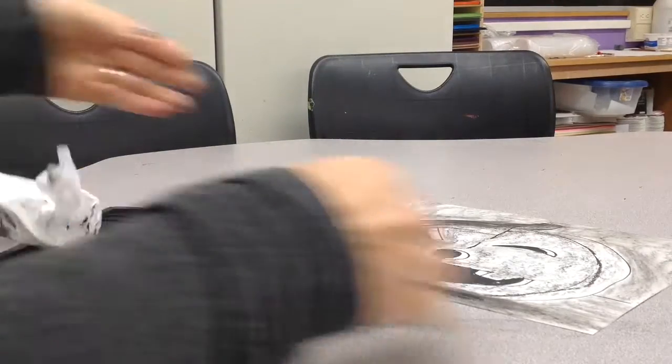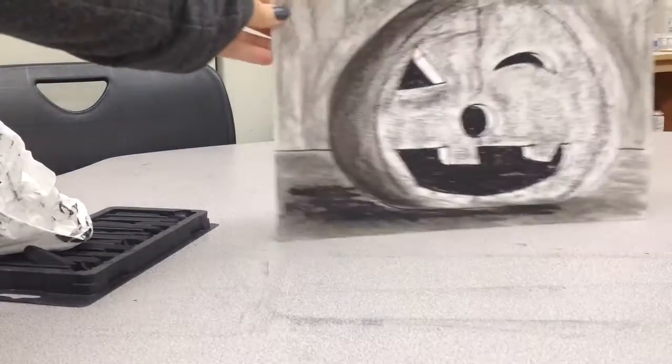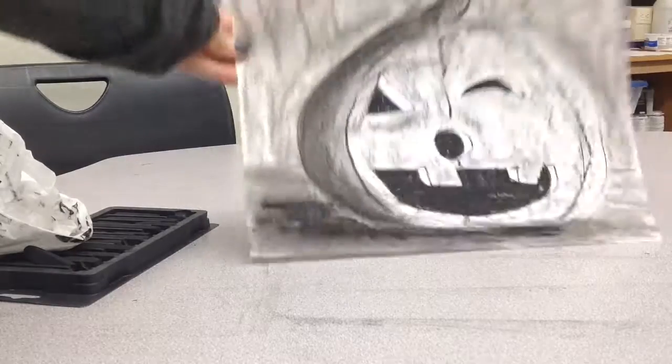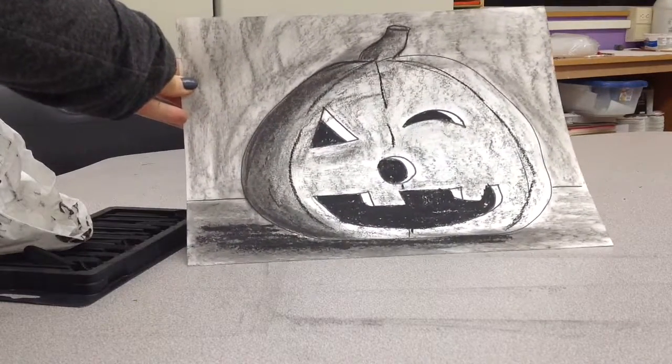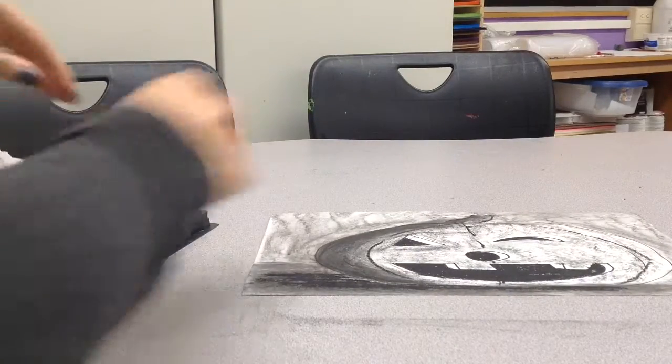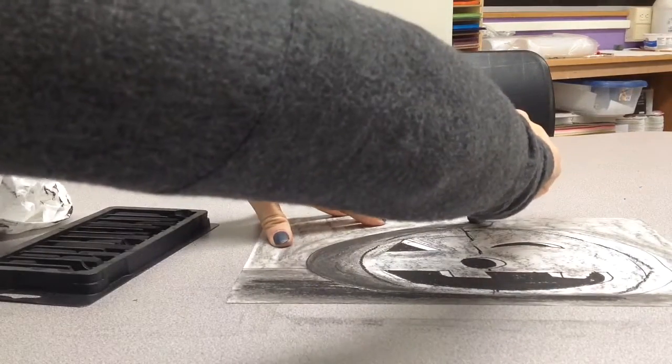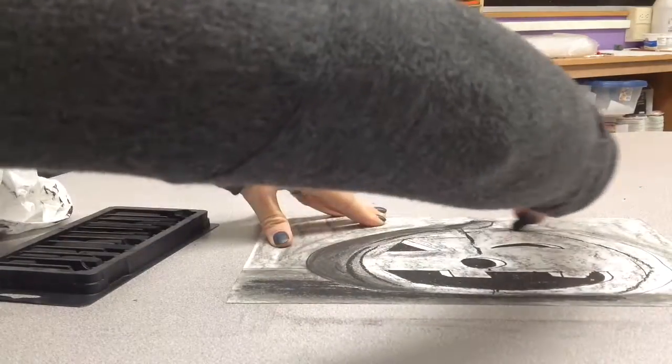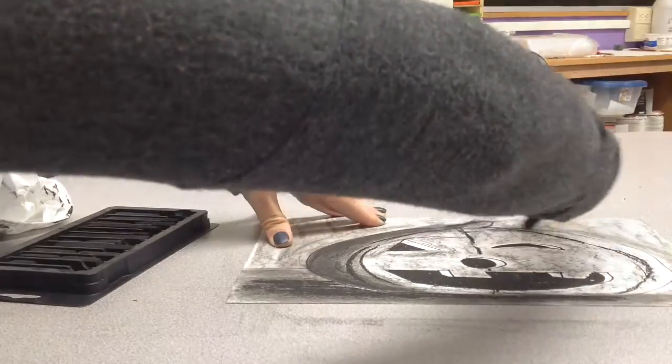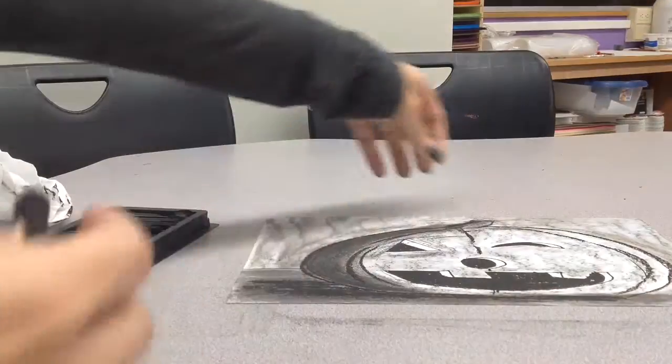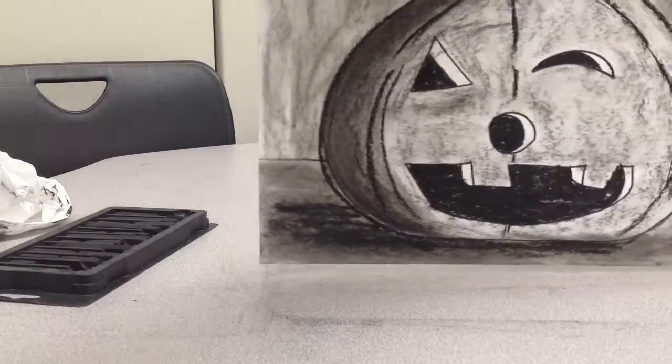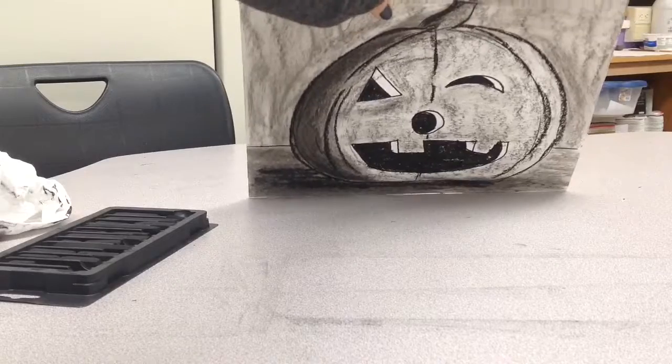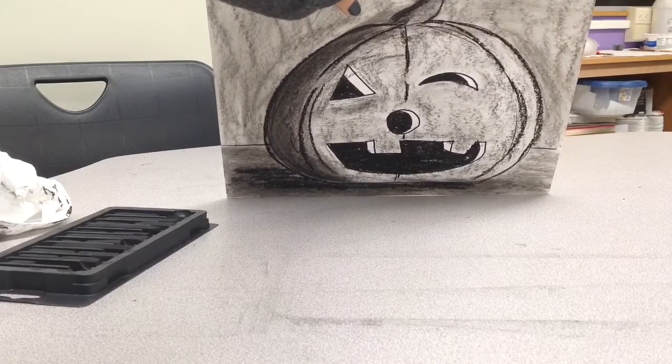Now, once you have the background and the foreground done, so it's all filled, you're going to go back with your charcoal, and you're going to put back in some of those darks to your stem. Again, you're going to do your black lines again in case some of them got smooth. You can outline the edge of your pumpkin like so. So once you're finished, it should be something in that realm.